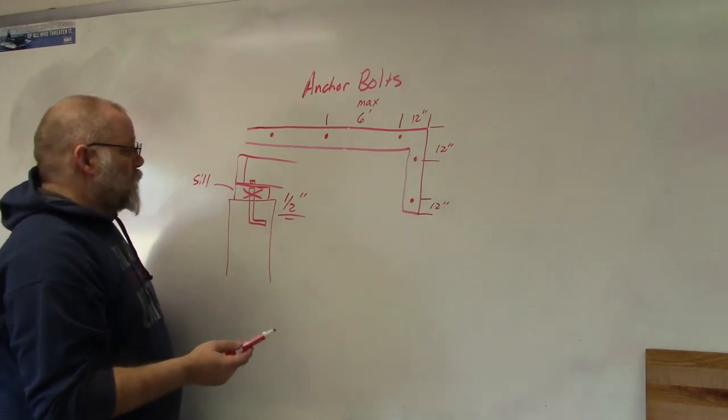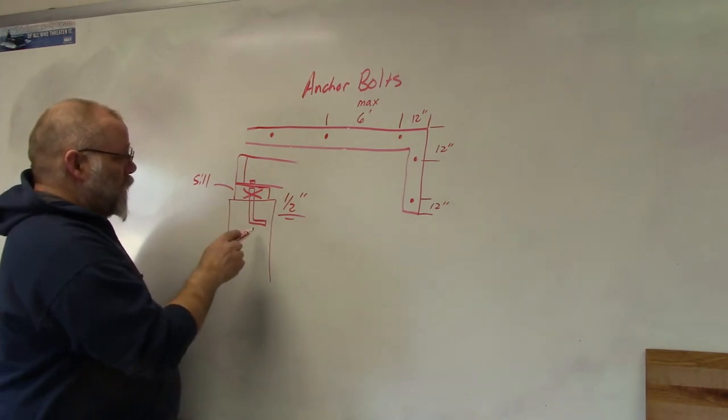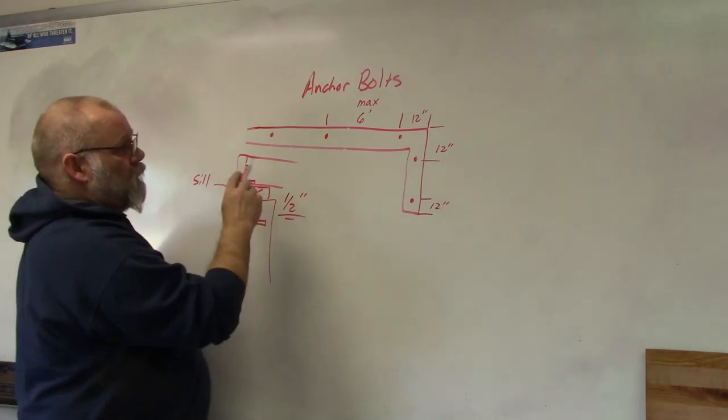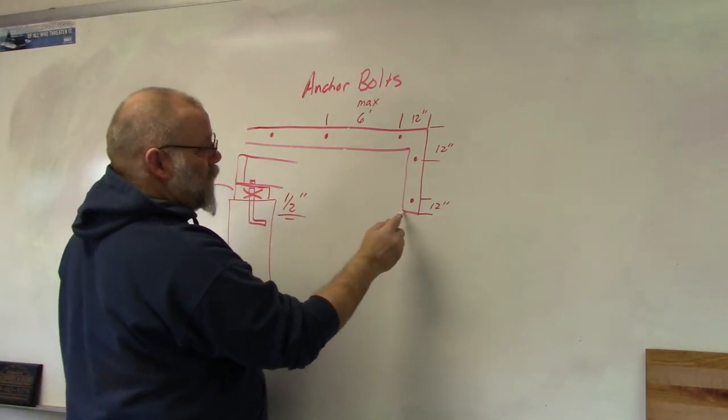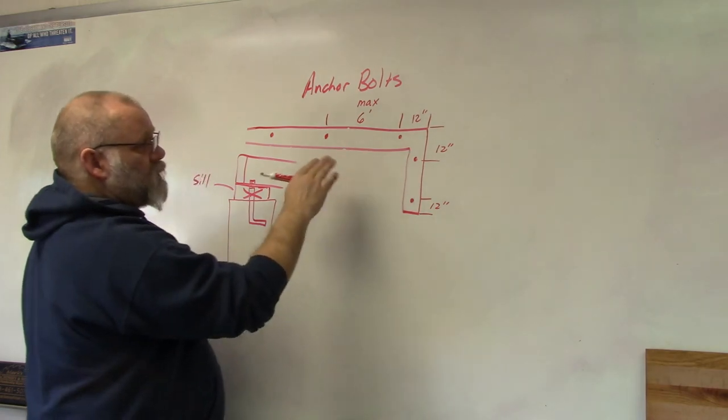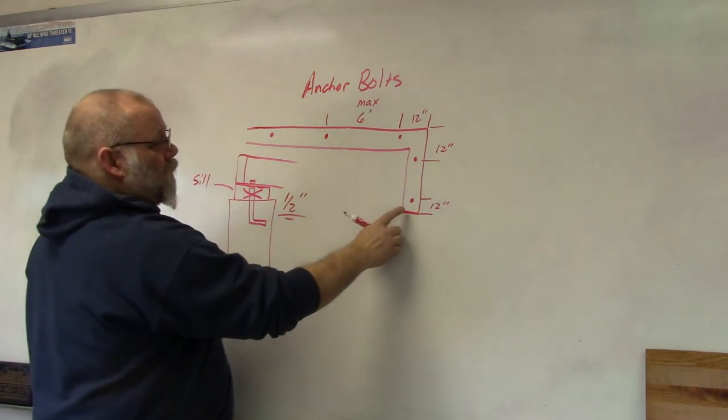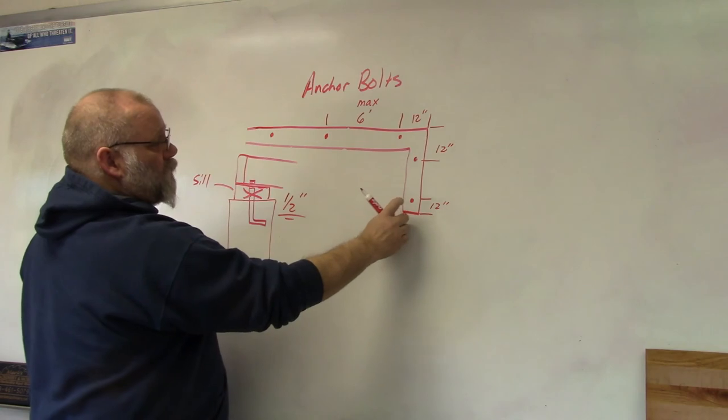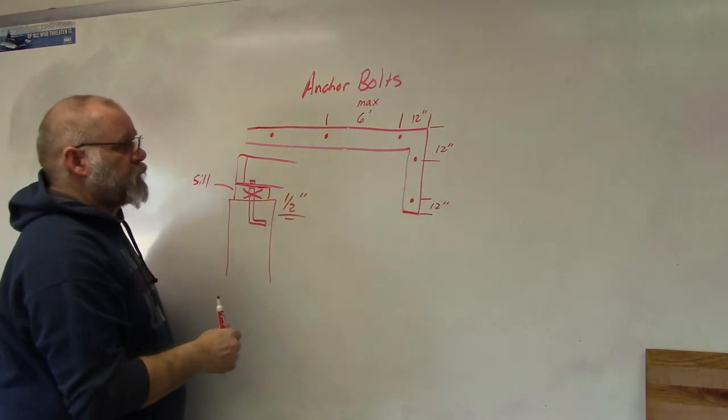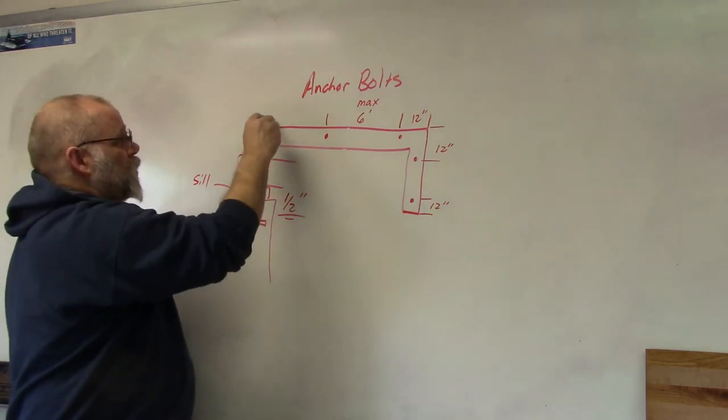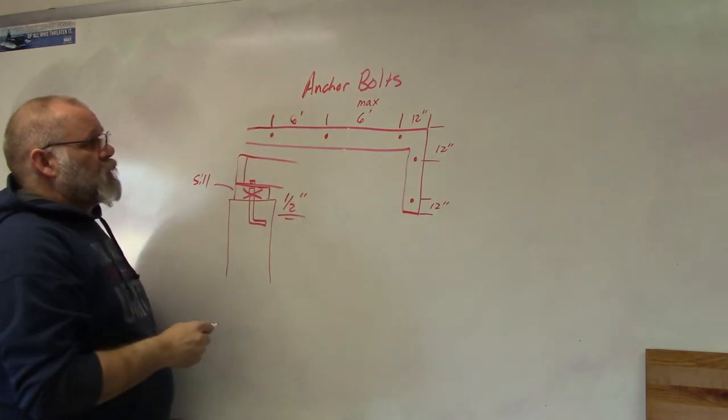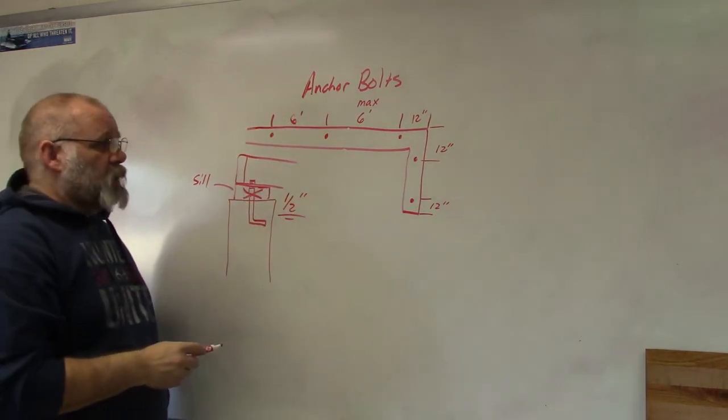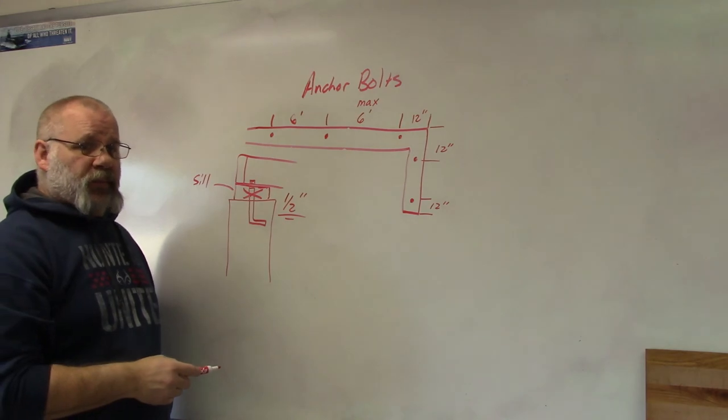That's basically all there is to installing anchor bolts. Remember, you've got to get them in when the concrete is still wet and pliable, and make sure you get them at the correct distance. These are the minimums, so if you wanted to put them closer together you could. Check local building codes to make sure that you're putting your anchor bolts in the correct place.